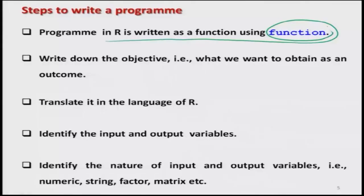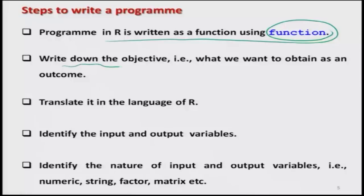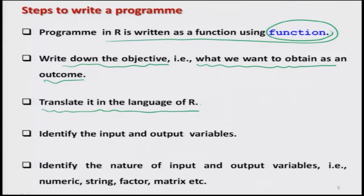When we talk about R software, it has its own language with special types of commands, their own syntax, and a specific way to use them — which we have learned up to now. Whenever we try to write a program in R, it is written using the command function. Writing a program in R is equivalent to writing a function. The first step in writing a function is to write down the objective — what we want to obtain as an outcome.